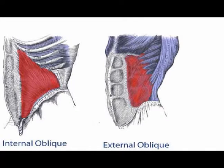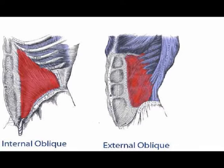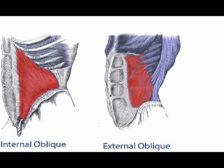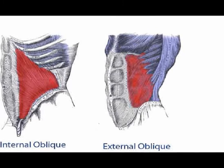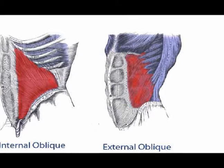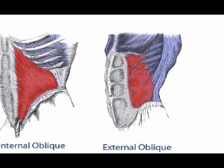The core is a box-like structure located in the center of the body. The core consists of muscles that attach to the spine and the pelvis. The anterior aspect of the core are the abdominal muscles. The posterior aspect of the core are the lumbar muscles. The roof of the core is the diaphragm, and the floor of the core is the pelvic floor muscles and the hip girdle muscles.